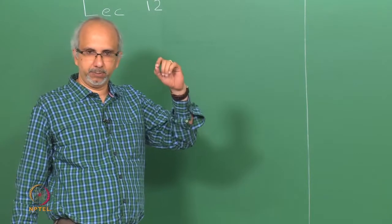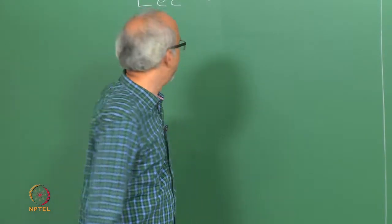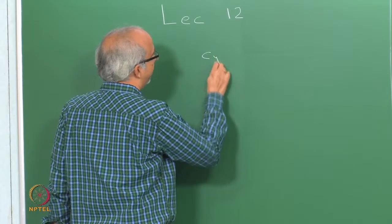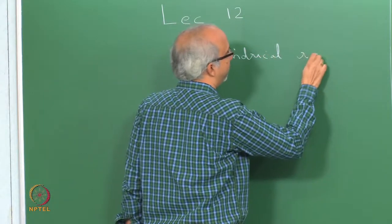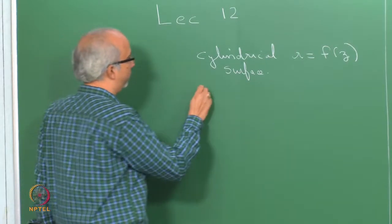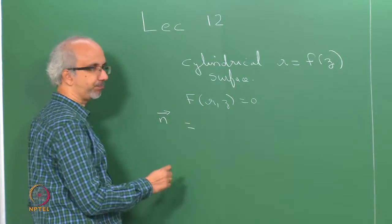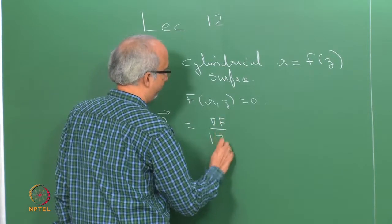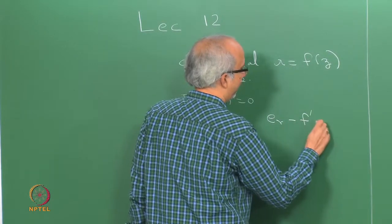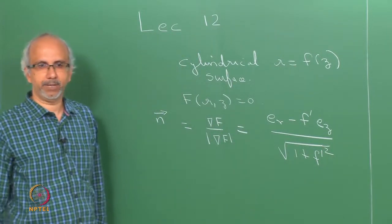The first thing I want to do is talk about the problem of the cylindrical surface and evaluate n·T·n so you have a feel for how it looks. We have the cylindrical surface given by r equals f of z. We write this in implicit form equal to 0, and the normal vector is the gradient of f divided by the mod of the gradient, which in this case is e_r minus f' e_z divided by the square root of 1 plus f prime squared. This we saw last time.